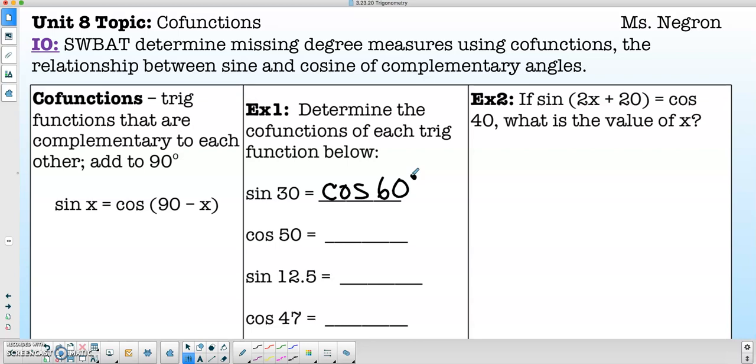Same concept works. So if I have cosine of 50, I know the co-function will be sine. And then 90 minus 50 is 40 degrees.